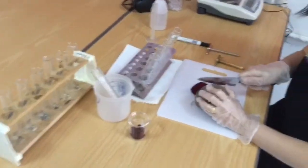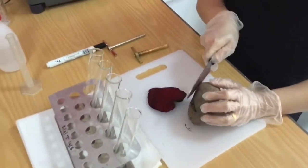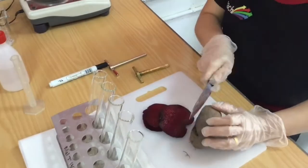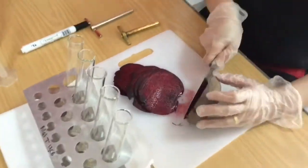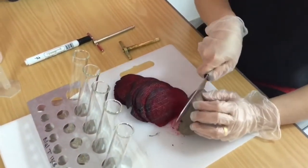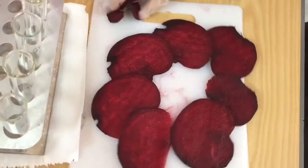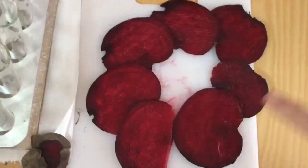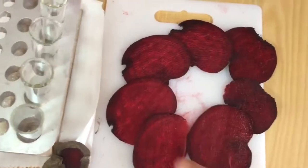Start by cutting 2mm deep discs of beetroot. This is a good way for us to see the variability in color across each of the discs, which is of course going to give us variability in our results depending on where we take our discs of beetroot from.